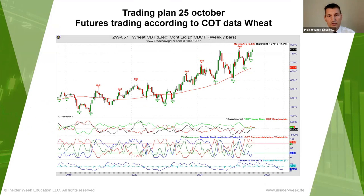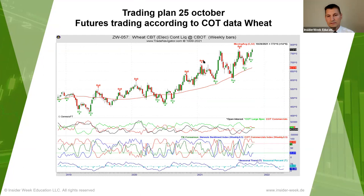Now I'd like to show you some trades we did in the last two months based on this strategy. It makes sense to take signals in the direction of the weekly trend, because our experience shows that signals in direction of the weekly trend work better. If you have a signal against the weekly trend, it may indicate a correction, not a trend change — and in that case we are very careful. We try not to trade against the weekly trend: trend is your friend.